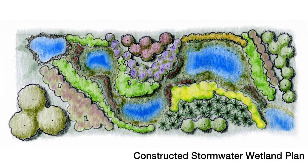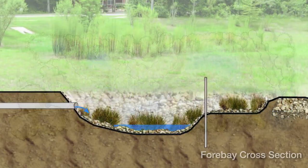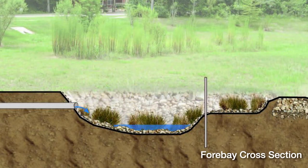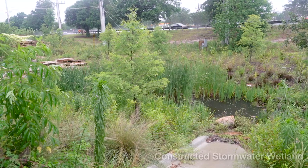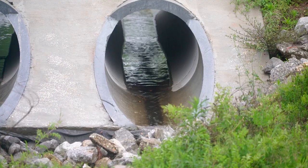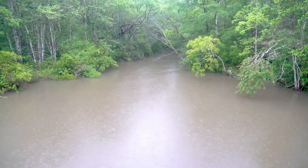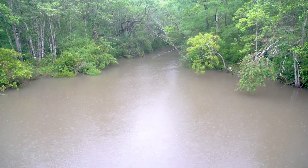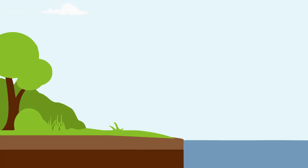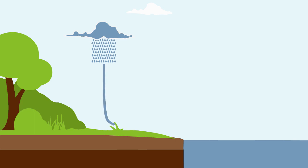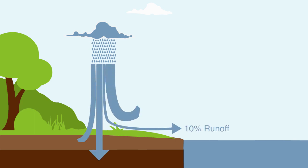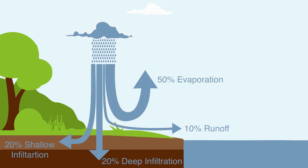Low-impact development involves planning and engineering designs that mimic natural processes to manage stormwater runoff and protect water quality. In natural areas, only 10% of rainfall converts to runoff into streams and rivers. Much of the stormwater is infiltrated into the ground.